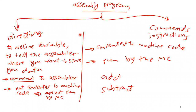Good afternoon everybody. Last time I started to teach assembly language. I told you in your program you write directives and also commands or instructions. I explained the difference: directives are instructions to the assembler, so they are not converted to machine code. Our microcontroller is not going to execute directives. Commands like addition or multiplication are converted to machine code and executed by the microcontroller, while directives are only executed by the assembler.